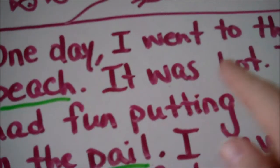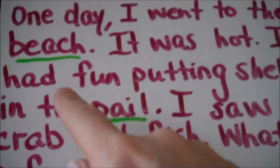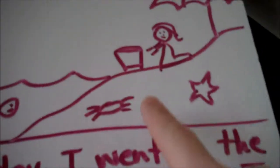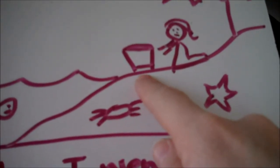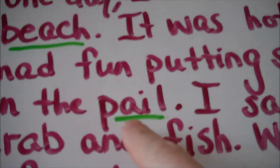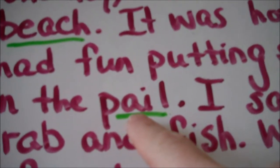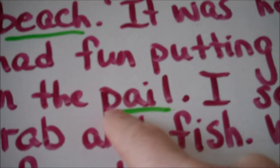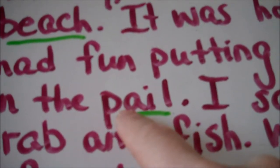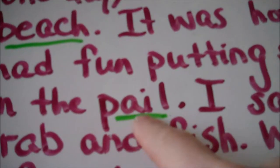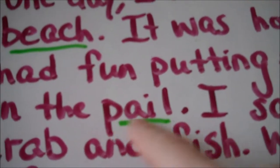Beach. 'It was hot. I had fun putting shells in the...' Now, they might look at that and think it's a bucket, and that's fine — normally you see sand bucket. But some books will have different words just to make sure the child understands what they're reading. It's not bucket; starts with a P. Encourage them to remember the two vowel rule: when two vowels are together, the first one says its name. P-A-I-L. Pail.